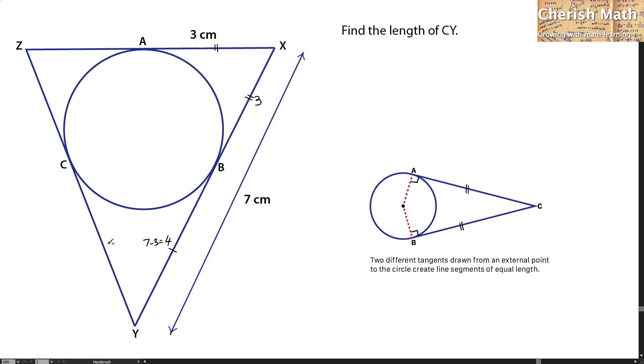BY is the same as CY, simply because Y is the external point for both BY and CY. So, CY that we are getting here is 4cm.